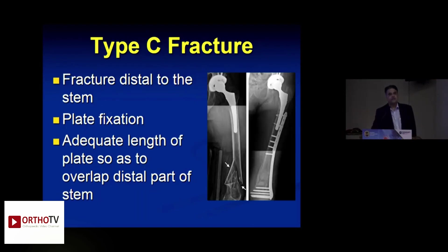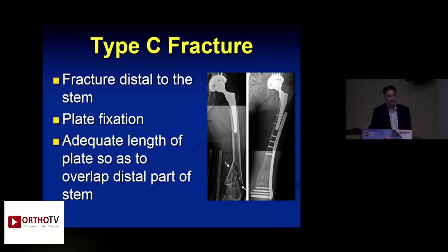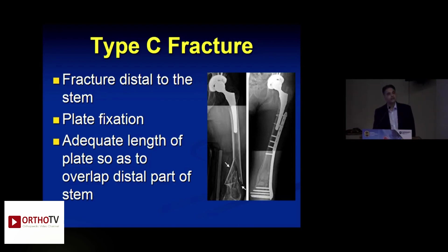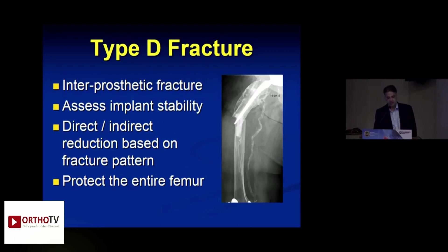Type C fractures are well distal to the stem of the implant, so stem stability does not come into account. Use internal fixation based on the merits of the fracture; extramedullary fixation with a plate is preferred. Make sure the plate is long enough to overlap the distal part of the stem to avoid creating any stress risers.